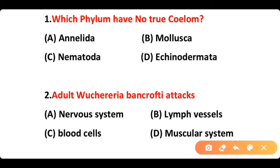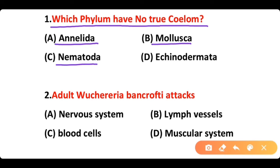Question number 1: Which phylum has no true coelom? Option A: Annelida, Option B: Mollusca, Option C: Nematoda, Option D: Echinodermata. The correct answer is option C. True coelom is absent in Nematoda; instead they have pseudocoelom.